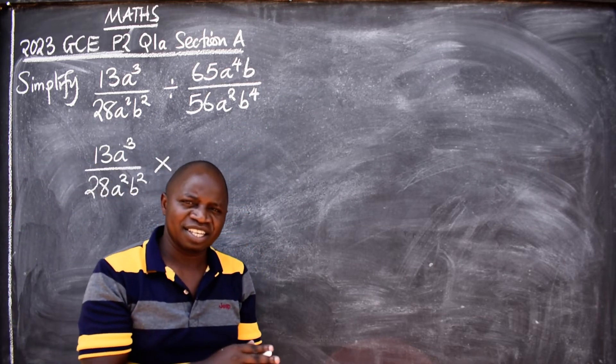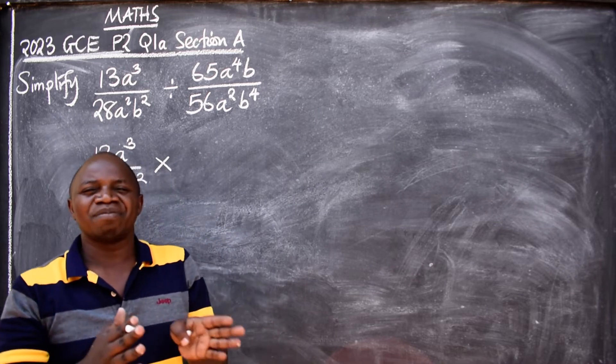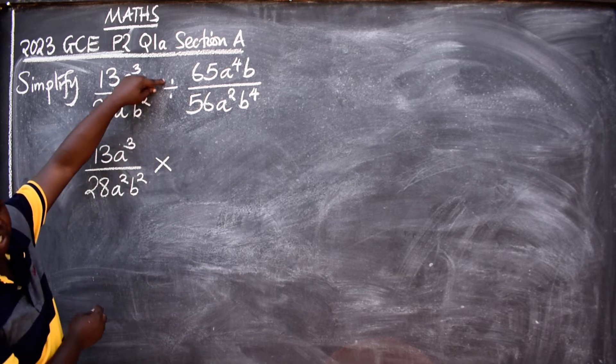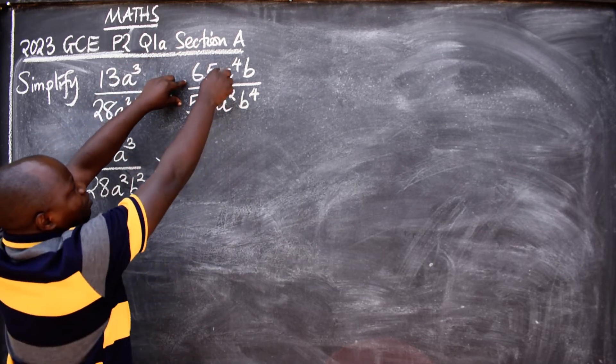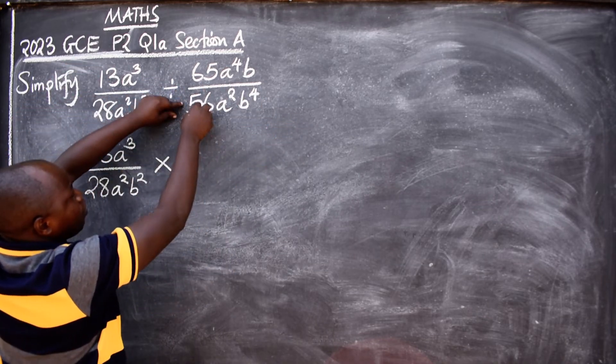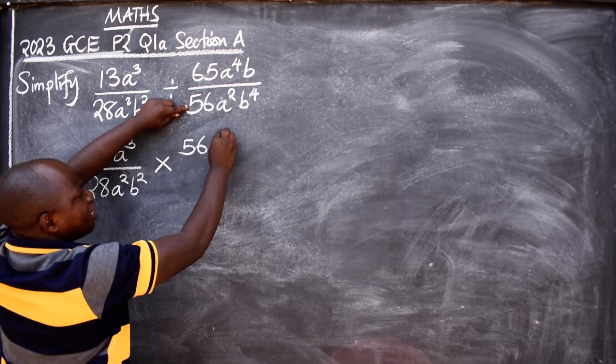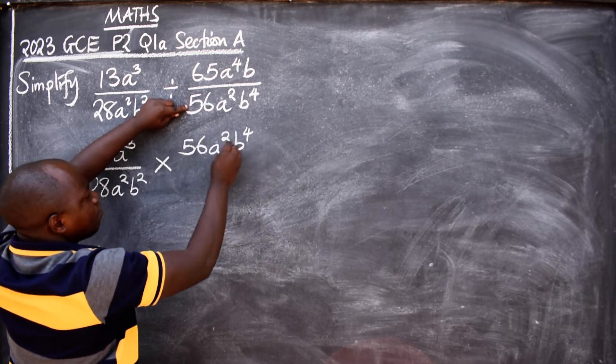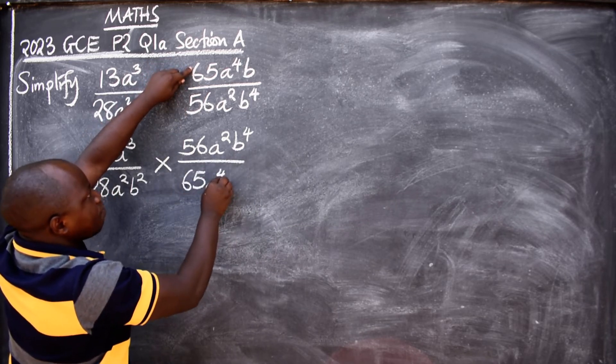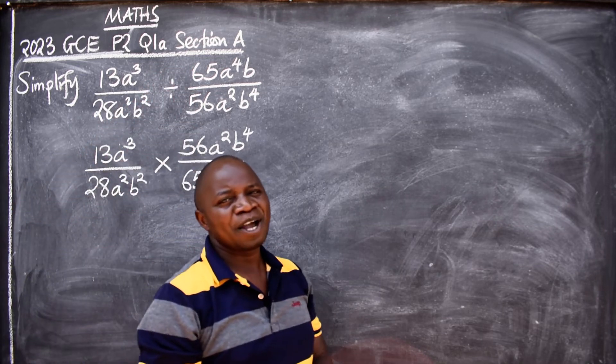Immediately you do that, it means this fraction here has been affected. It has to change also. The denominator will become the numerator and the numerator will be the denominator. So from division here to multiplication, you change this. My denominator here which is 56 will be the numerator: A²B⁴ over 65A⁴B. That is the application.